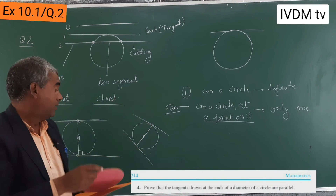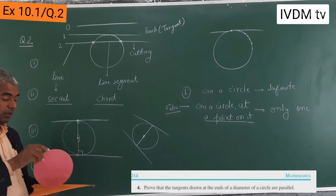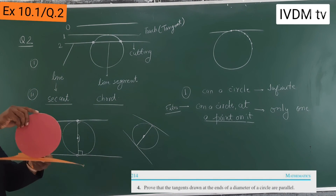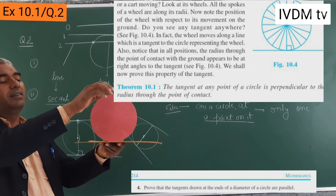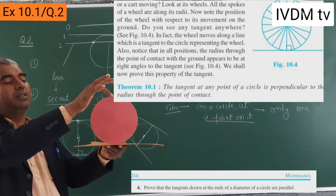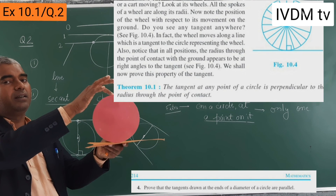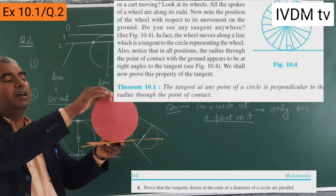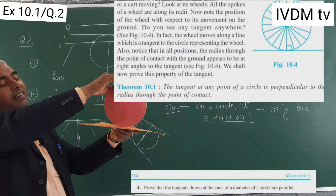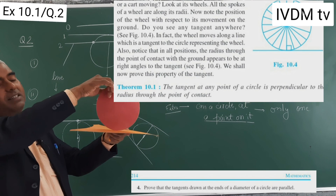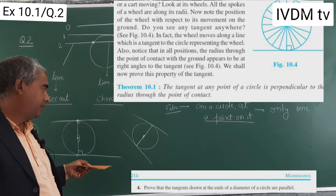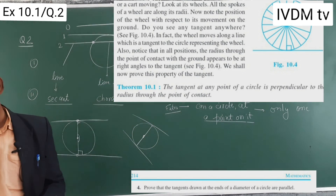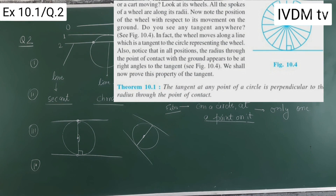So fourth number: a tangent to the circle — this is the whole line, whole plane — so fourth number: point of contact.